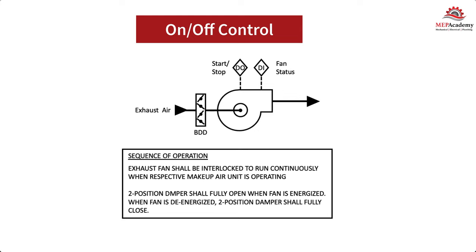On-off control: The most basic form of control is to turn on and off a piece of equipment with an on-off switch. You have two options — either the equipment can be on or off. This can be done with a simple light switch as an example.